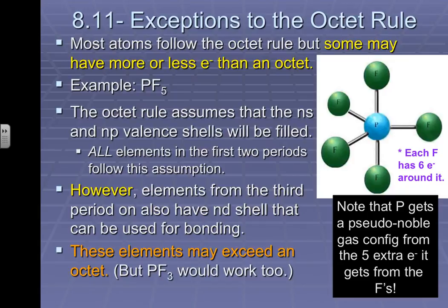PF3, as I have in parentheses down there, is also a perfectly acceptable normal type of thing that could happen. That's also something that's possible, and it actually would not exceed the octet rule at that point. So there's just some atoms in here that have options, and one of their options is sometimes exceeding the octet.